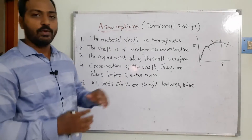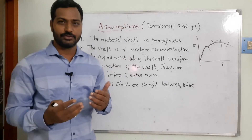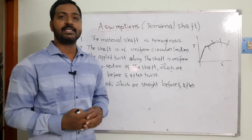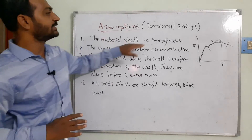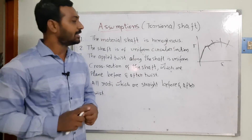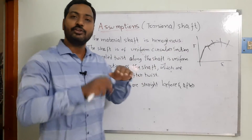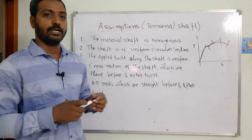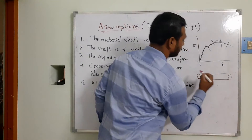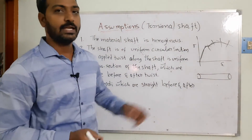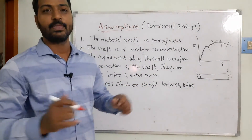Now, coming to the assumptions and why we make them: to achieve linearity, all conditions must be linear. The first assumption is that the material of the shaft is homogeneous and isotropic. Homogeneous means the material distribution throughout the shaft is constant — from point one to point two it remains uniform.